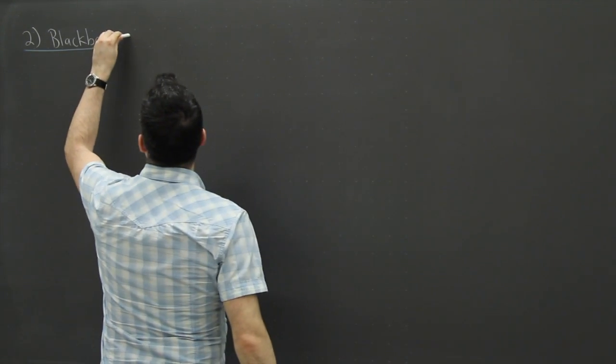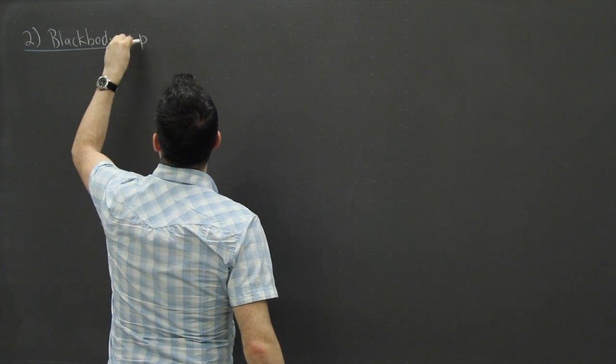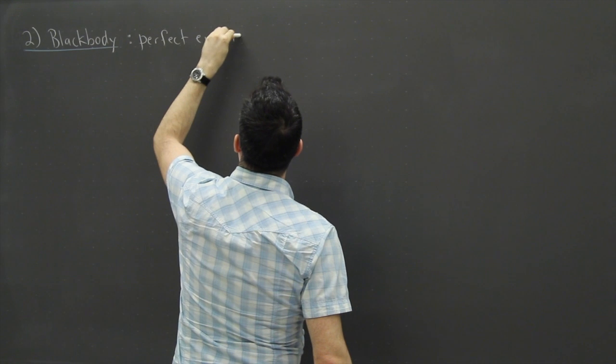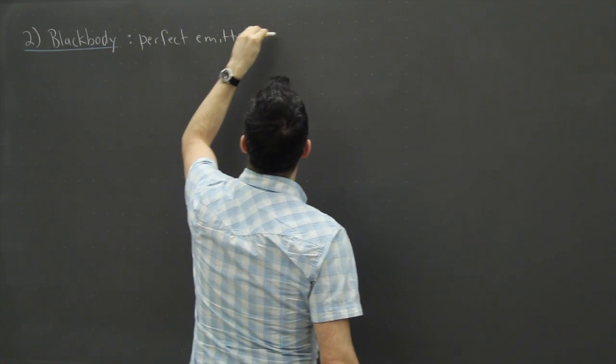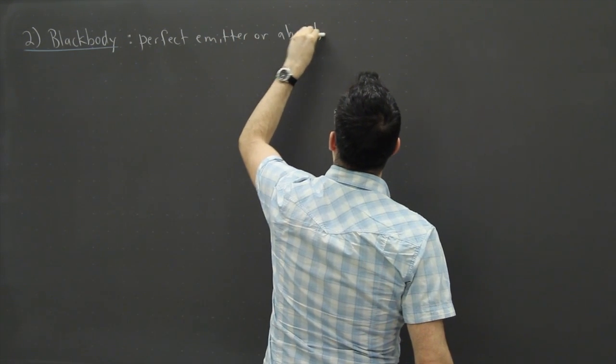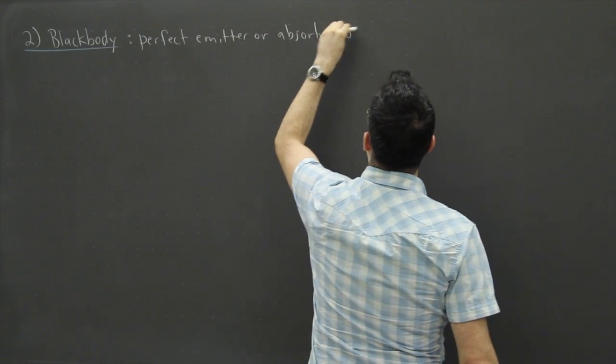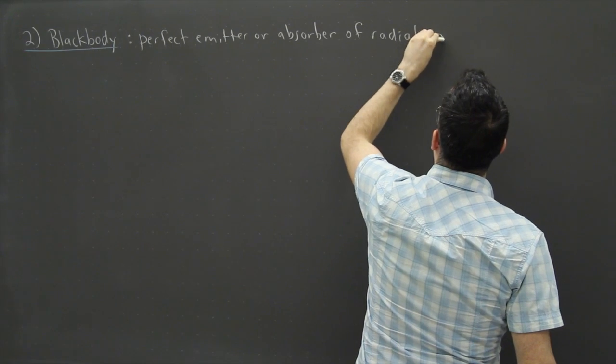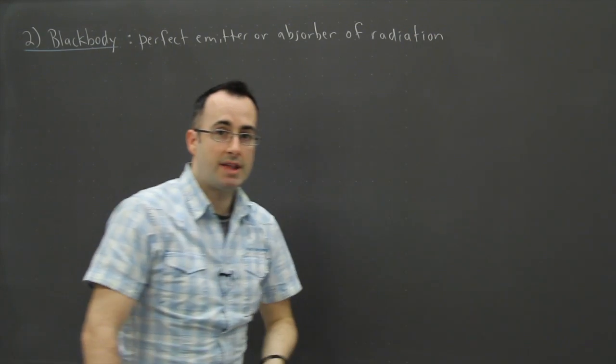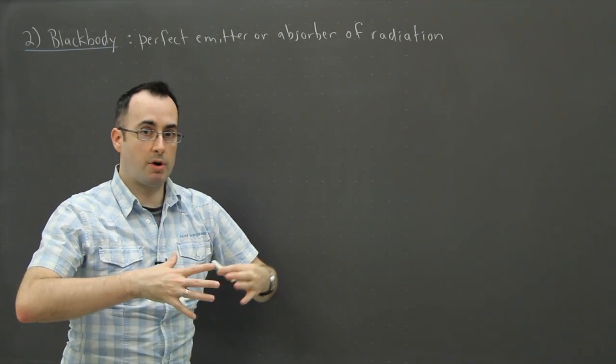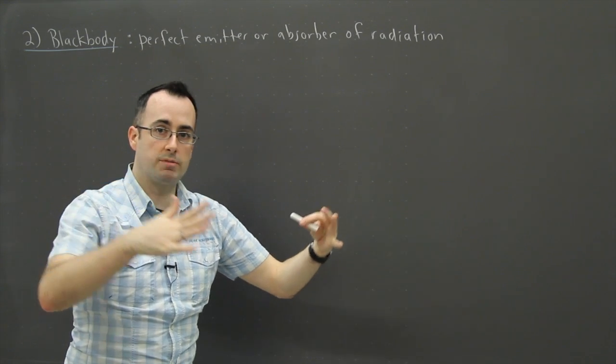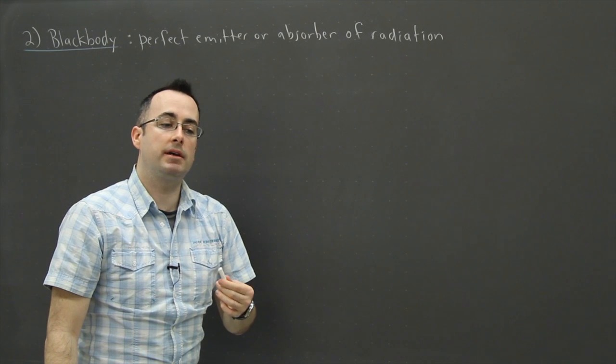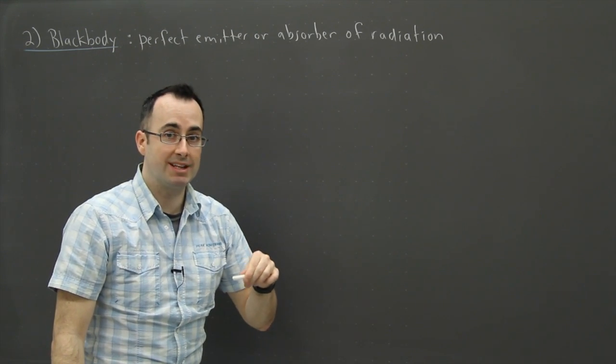So a black body is something that is a perfect emitter or absorber of radiation. That means it emits radiation perfectly and it absorbs radiation perfectly, so it's a way to make our understanding of stars a little bit simpler.